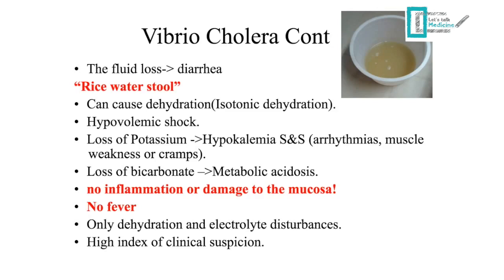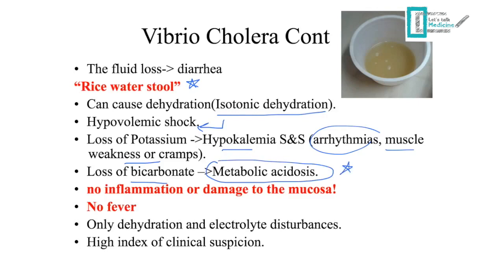The character of the diarrhea is rice-water stool — the patient may describe a milky appearance or water that looks as if rice has been rinsed in it. This is important for MCQ scenarios. Cholera causes isotonic dehydration, potentially leading to hypovolemic shock, and can result in liters of fluid loss per day. Signs of dehydration include sunken eyes, loss of skin elasticity, and dry mouth. Loss of potassium causes hypokalemia, leading to arrhythmia and muscle cramps. Loss of bicarbonate causes metabolic acidosis.